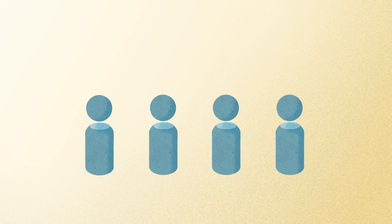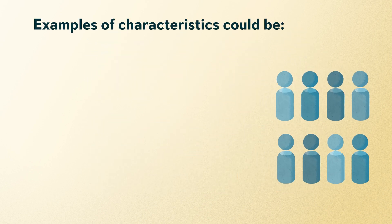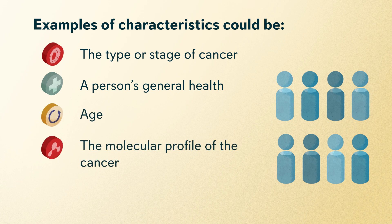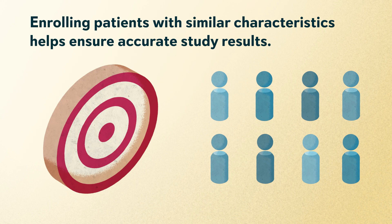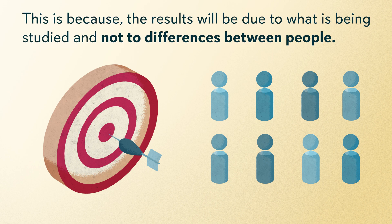Eligibility criteria are also used to enroll people with similar characteristics. Examples of characteristics could be the type or stage of cancer, a person's general health, age, the molecular profile of the cancer — for example, the features of the cancer cells like genetic makeup — and any treatments a person has had in the past. Enrolling patients with similar characteristics helps ensure accurate study results, because the results will be due to what is being studied and not to differences between people.